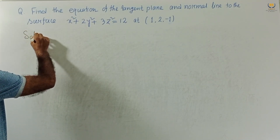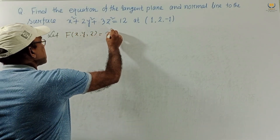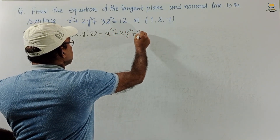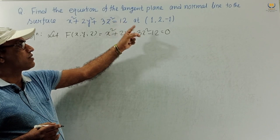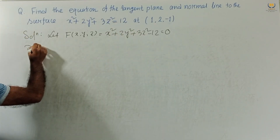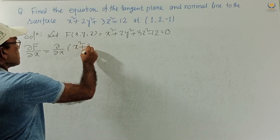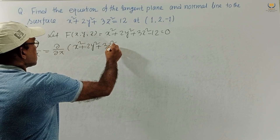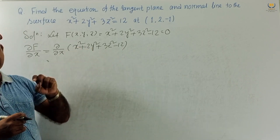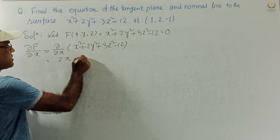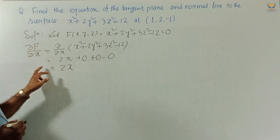Solution: let f(x, y, z) = x² + 2y² + 3z² - 12 = 0. We take the left-hand side equal to 0. First, we find ∂f/∂x. This is ∂/∂x of (x² + 2y² + 3z² - 12). Differentiating partially with respect to x, with y and z constant, we get ∂f/∂x = 2x.